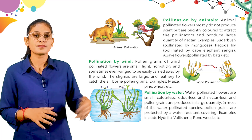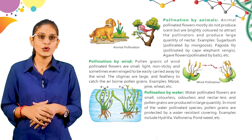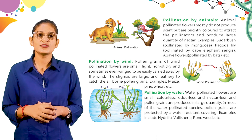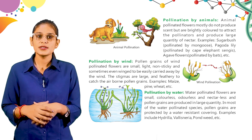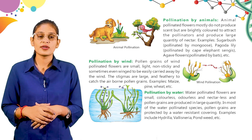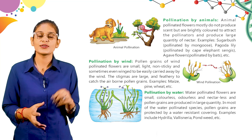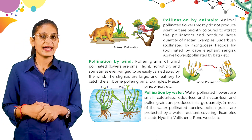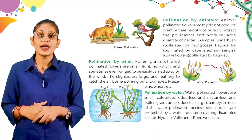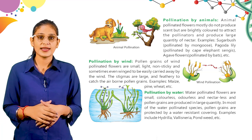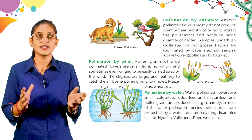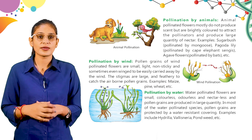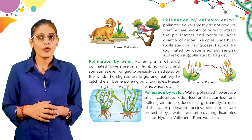Pollination by wind: pollen grains of wind-pollinated flowers are small, light, non-sticky, and sometimes winged to be easily carried away by the wind. The stigmas are large and feathery to catch the airborne pollen grains. Examples: maize, pine, wheat, etc. Pollination by water: water-pollinated flowers are small, colorless, odorless, and nectarless, and pollen grains are produced in large quantities. In most water-pollinated species, pollen grains are protected by a water-resistant covering. Examples include hydrilla, Vallisneria, and pond weed.